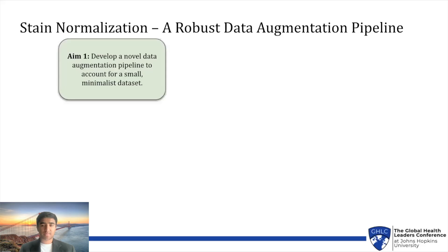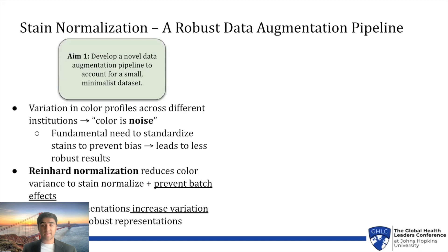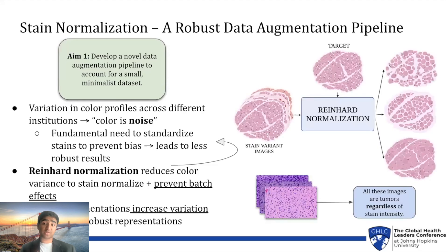I first developed a unique data augmentation pipeline to work with the limited dataset, and I discovered that variations in color profiles across my images, often referred to as batch effects, caused my models to learn irrelevant information, thus preventing transferability when evaluating the models on real-world data. To mitigate this, I employed Reinhardt's stain normalization, an image augmentation technique that maps all images to the same color profile so the model learns to focus on features outside of the stain gradient. I also incorporated random augmentations into my dataset before training. The workflow image on the right provides an overview demonstrating how stain variations can misinform diagnostic prediction.